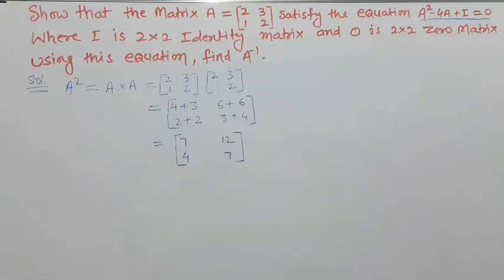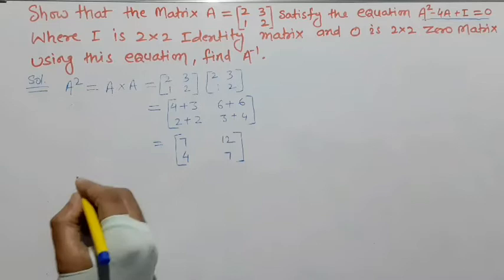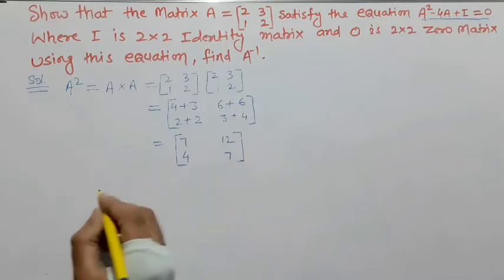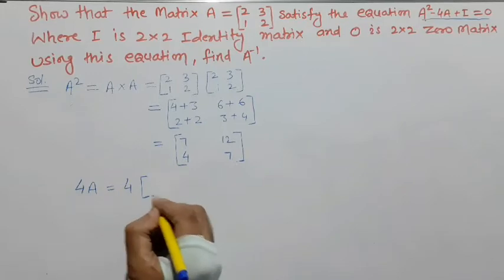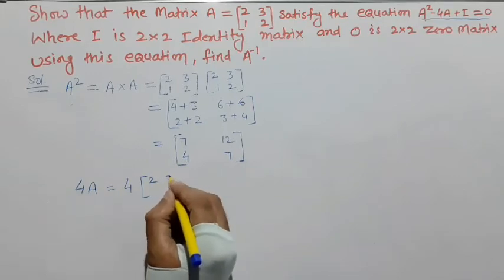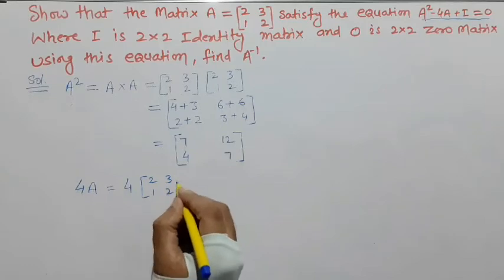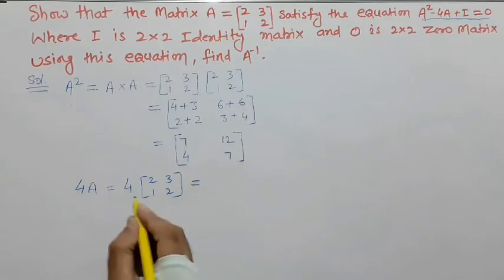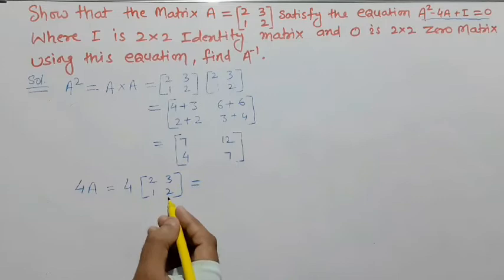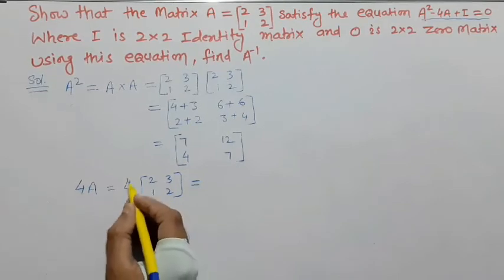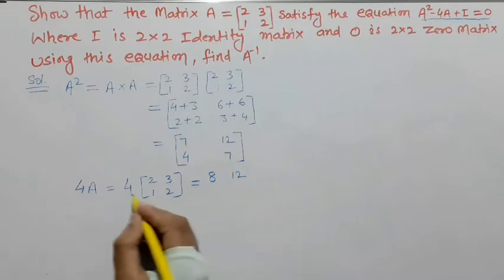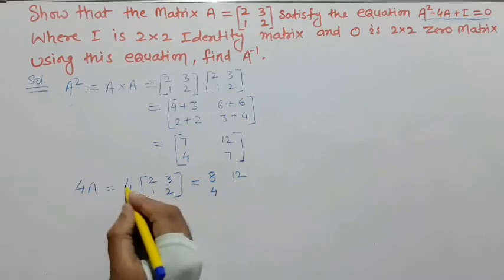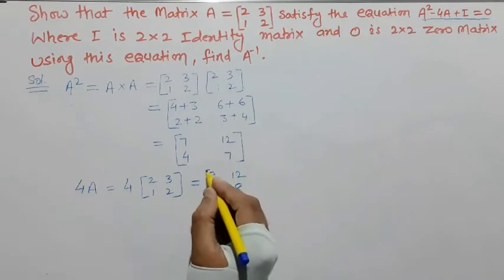यह हो गया हमारा A². अब 4A निकाल लेंगे। 4 into A matrix [[2,3],[1,2]] — जब किसी constant से matrix को multiply करते हैं तो हर element के साथ multiply होता है। तो 4A = [[8,12],[4,8]]।